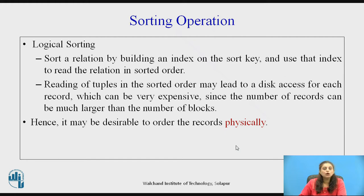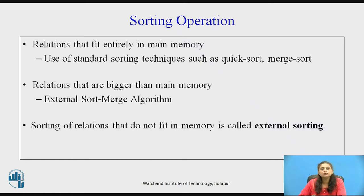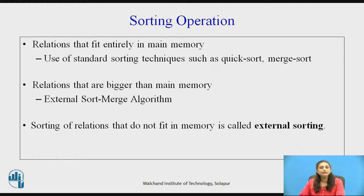That is why we should go for physical sorting. It is desirable to order the records physically. If the relation fits into main memory, then we can use any standard sorting technique like quicksort or mergesort. But if the relation is bigger than main memory, then we have to go for the external sort-merge algorithm. Sorting a relation that does not fit in main memory is called external sorting.